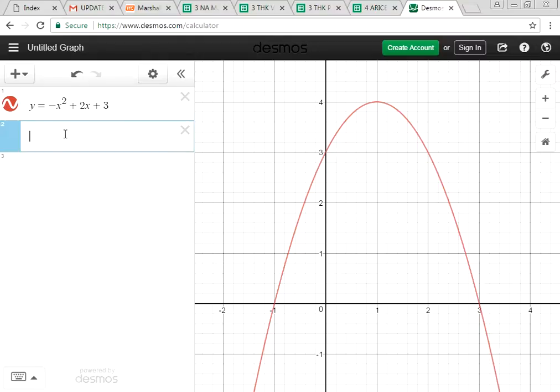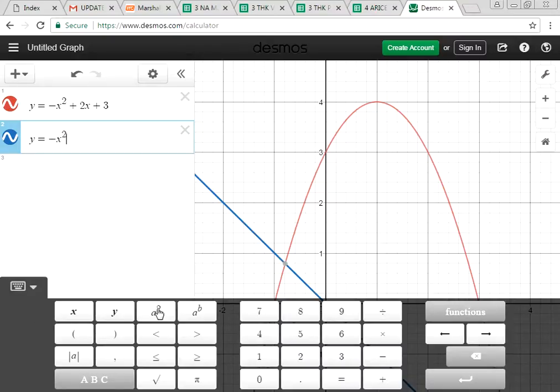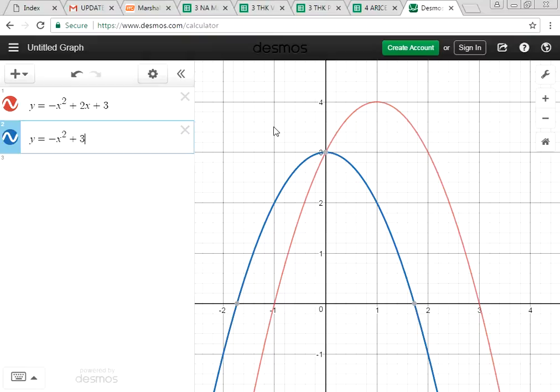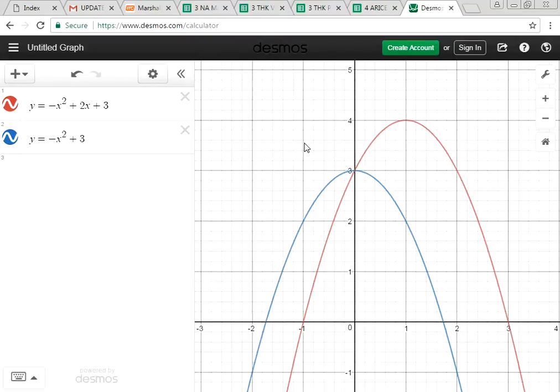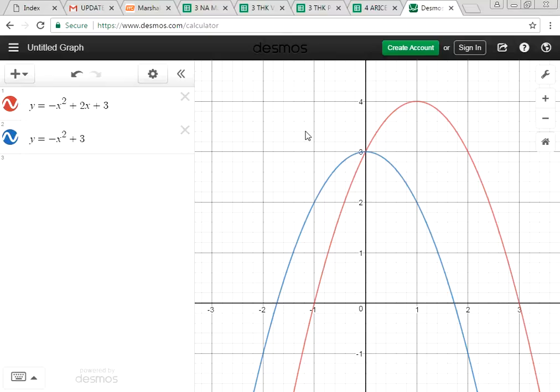Now I'm going to show you the second graph. Y equals to negative x square plus 3. This is the blue color of my second graph. Can you fill out the answers as well?